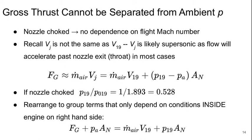So the gross thrust is the mass flow rate times the jet velocity. But that's the mass flow rate times V19 plus the contribution from any pressure difference between the nozzle exit and atmospheric pressures. AN is the nozzle exit area.